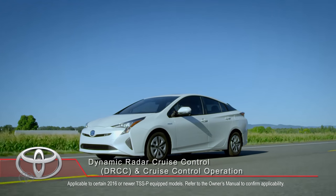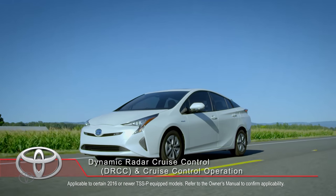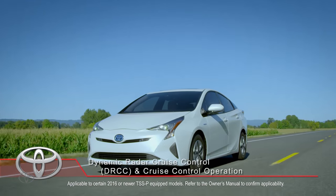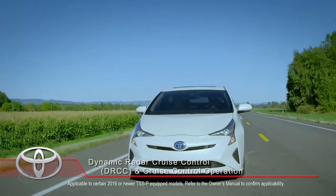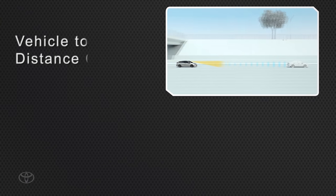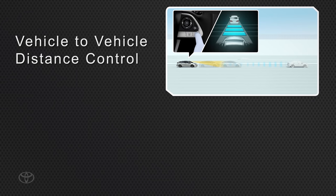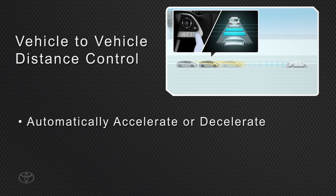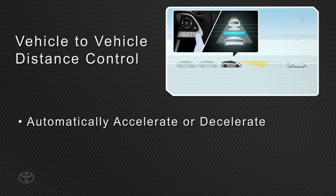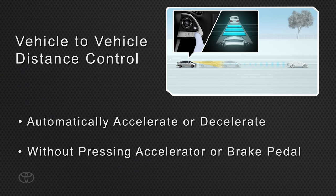The Dynamic Radar Cruise Control system supplements conventional cruise control with vehicle-to-vehicle distance control. It allows the vehicle to automatically accelerate or decelerate in order to help maintain a set following distance from a vehicle traveling directly ahead, without pressing on the accelerator or brake pedal.